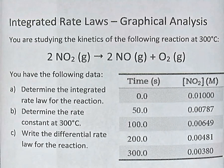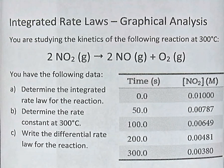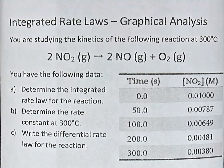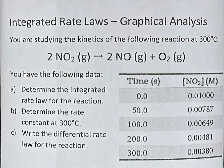In this video we're going to take a look at how to apply what we've learned about integrated rate laws in order to find the integrated rate law for a given reaction using data and a graphing calculator. We've got a chemical reaction studied at 300 degrees Celsius — the decomposition of nitrogen dioxide. It has only one reactant decomposing, so we don't have to worry about flooding the system. Times are in seconds and the concentration of NO2 is in molarity. We'll find the integrated rate law, determine the rate constant at 300°C, and write the differential rate law.